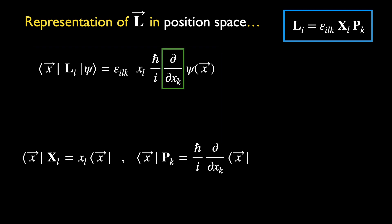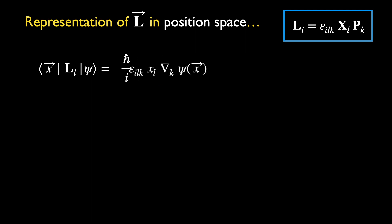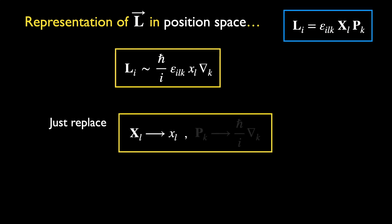Let's replace the partial derivative with respect to x with a more compact notation, which is also the notation used by Weinberg. Because ψ is an arbitrary wave function in position space, we now have the representation of Li in position space. Note that we can get this from the definition of angular momentum in the blue box by replacing the x and p operators by their representations in position space.